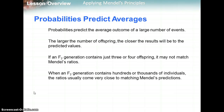Probabilities predict averages — they tend to predict the average outcome of a large number of events. The larger number of offspring, the closer your results will be to predicted values because you have more trials. If an F2 generation contains only three or four offspring, it might not match Mendel's ratios. When an F2 generation contains hundreds or thousands of individuals, the ratios usually come very close to Mendel's predicted ideas.